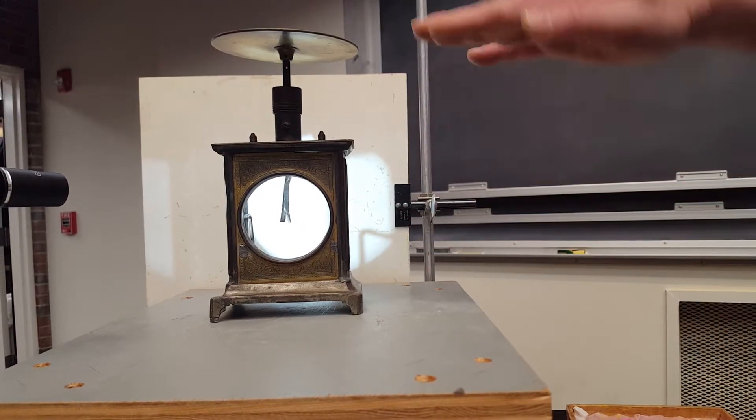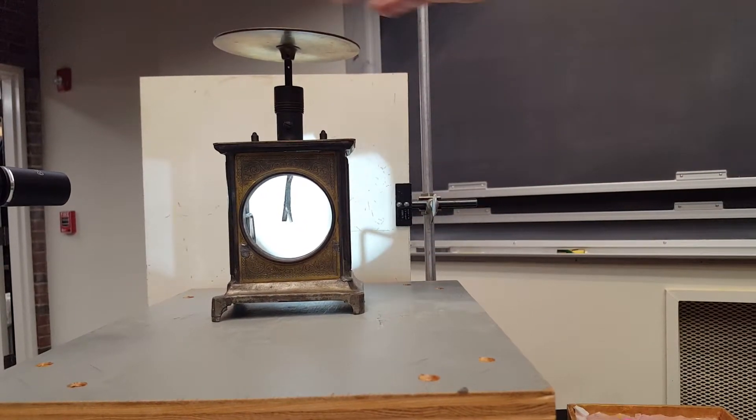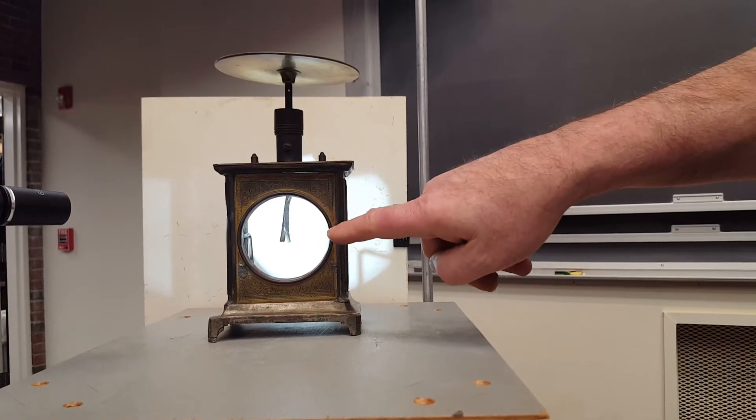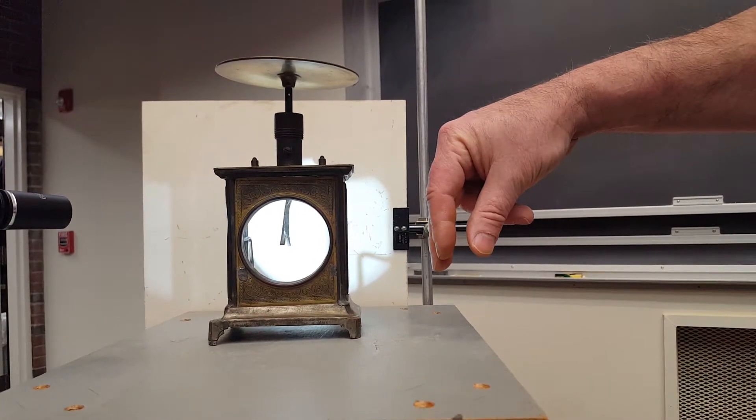Here we have a foil leaf and electroscope connected to this top plate. Right now they're uncharged and the leaves are hanging relaxed.